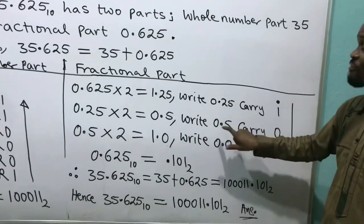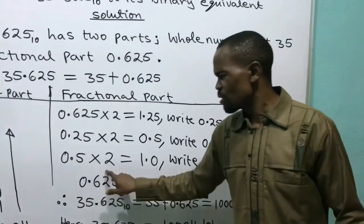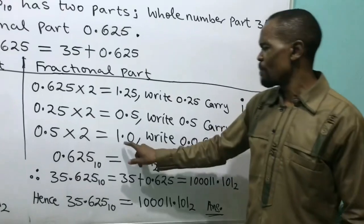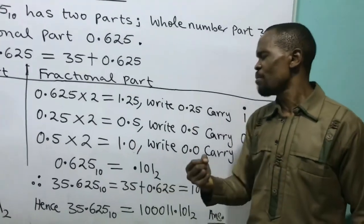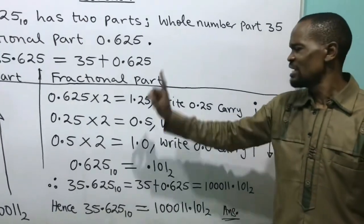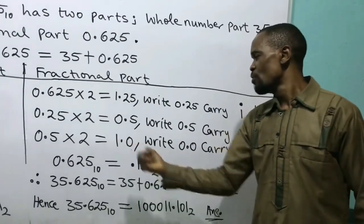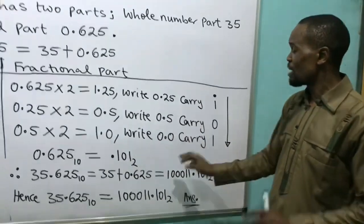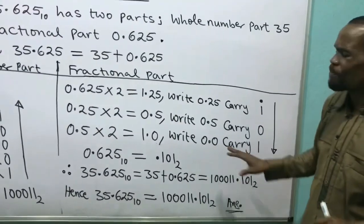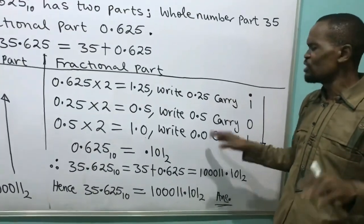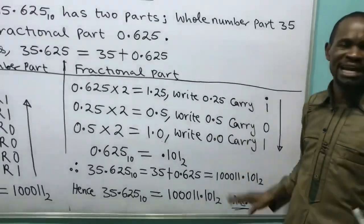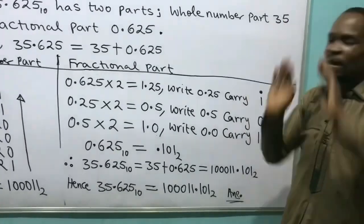I take the fractional part 0.5 back and multiply by 2. I have 1.0. I take the whole number part, which is 1, carry it over. What remains when I've taken this 1 is 0, so I write down 0.0 as my fractional part. My fractional part has finished — 0.0 is nothing, so I terminate here.